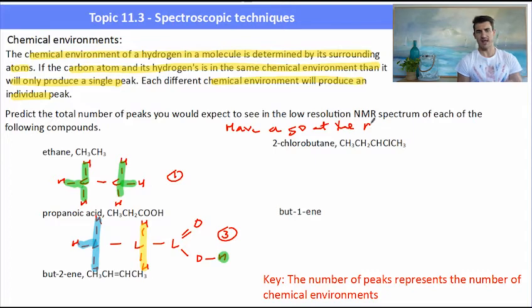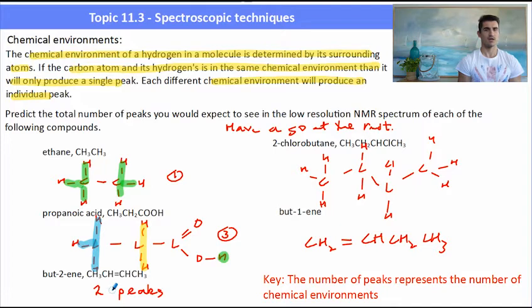What I'd like you to do is have a go at the next three. Butene will have two peaks. Two chlorobutane, well that's an interesting one. Here we have our hydrogen with our chlorine, that's in an environment all by itself. We have a CH2 group in the middle, but the question is are those two CH3 groups on the end the same or different? Well one of the CH3 groups is connected to the carbon with the chlorine and the other one is connected to a CH2. So that will have four chemical environments.